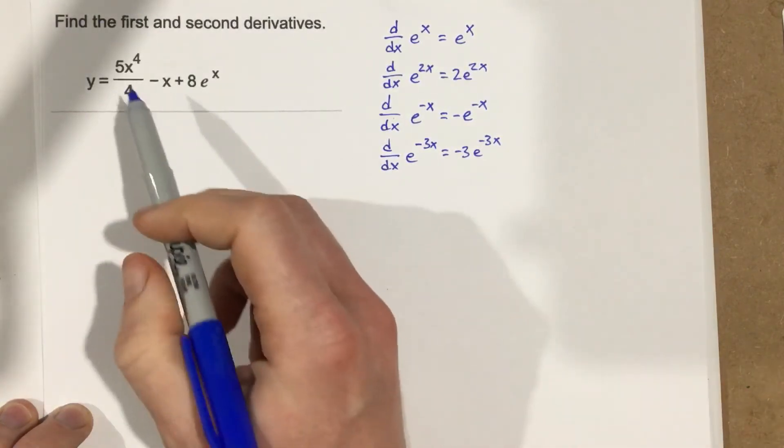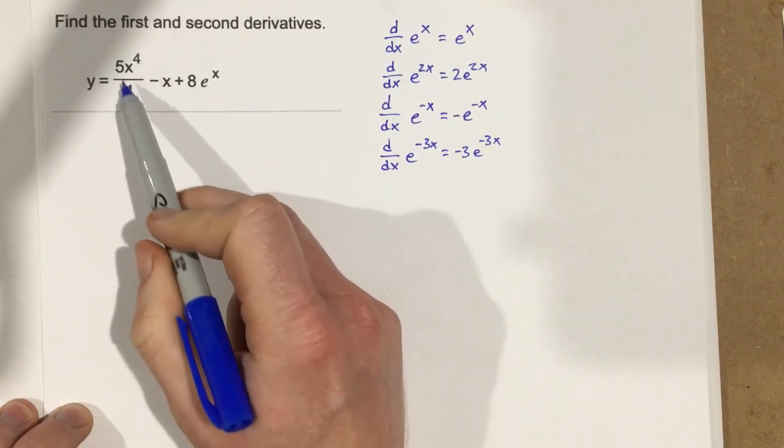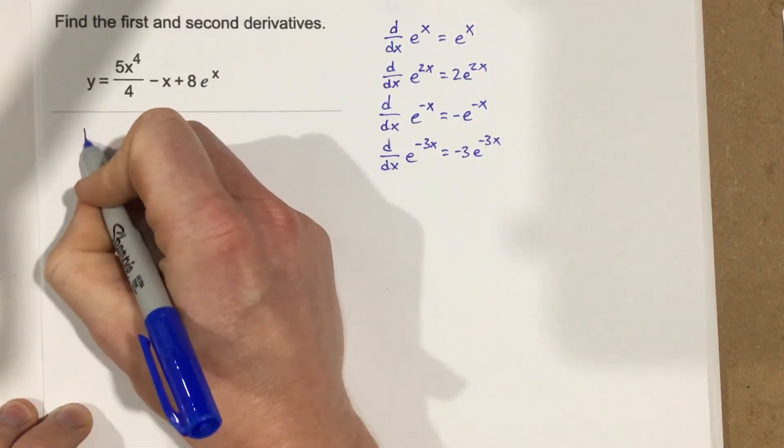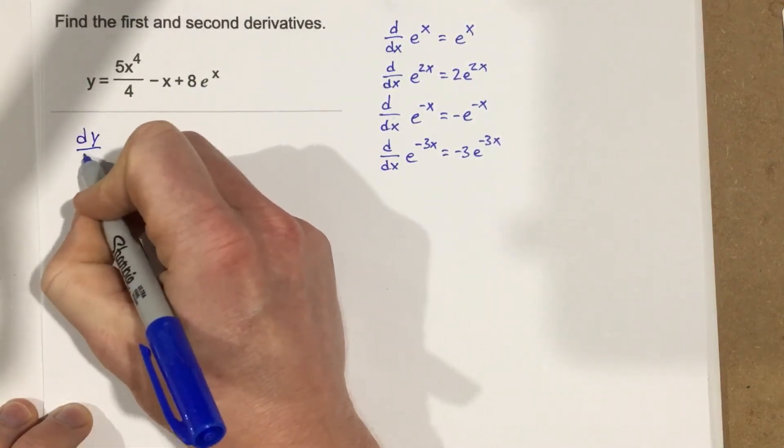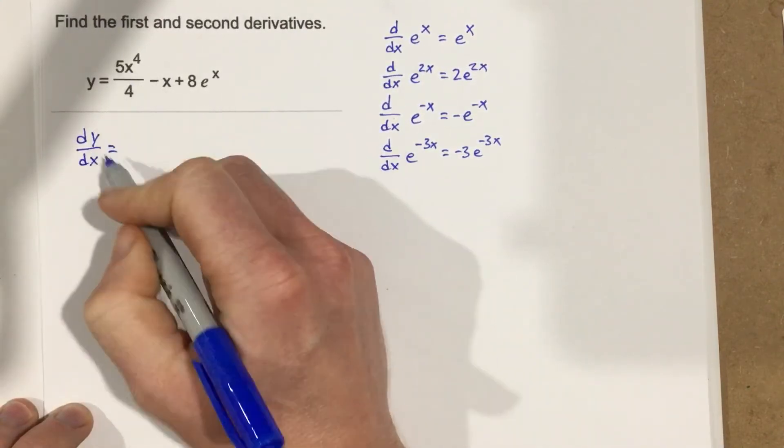So let's go ahead and evaluate this. When we find the derivative of this function, we're finding the derivative of each term individually. So we're going to say dy over dx. So this is the first derivative.